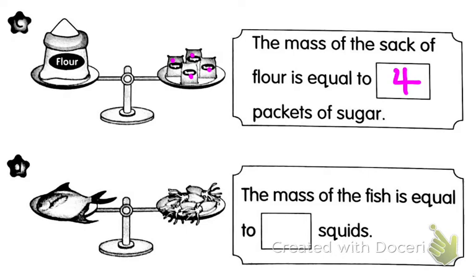Picture D — fish compared to squid: the mass of the fish is equal to how many squid? Let's count the squid: one, two, three, four — four squid.